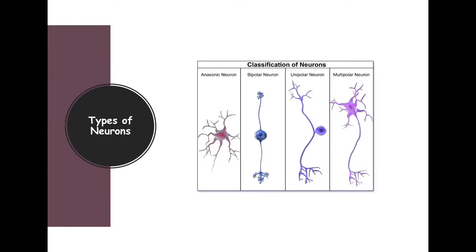We have different types of neurons outside of just being motor versus sensory. We have a general classification of neurons. First we have axonomic neurons, which pretty much don't have an axon or a defined axon. Then we have bipolar neurons, unipolar, and multipolar. They're classified based on how their cell body looks and how they're attached to the axon if one is present. Motor neurons tend to be more multipolar in nature, whereas sensory neurons can be unipolar or bipolar. There's also another neuron called the interneuron.